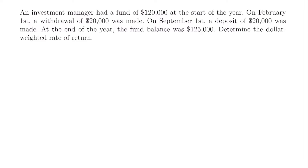Welcome back. Let's start with this example. We have that an investment manager had a fund of $120,000 at the start of the year. On February 1st, a withdrawal of $20,000 was made. On September 1st, a deposit of $20,000 was made. And at the end of the year, the fund balance was $125,000 — to determine the dollar-weighted rate of return. Our problem tells us that explicitly.